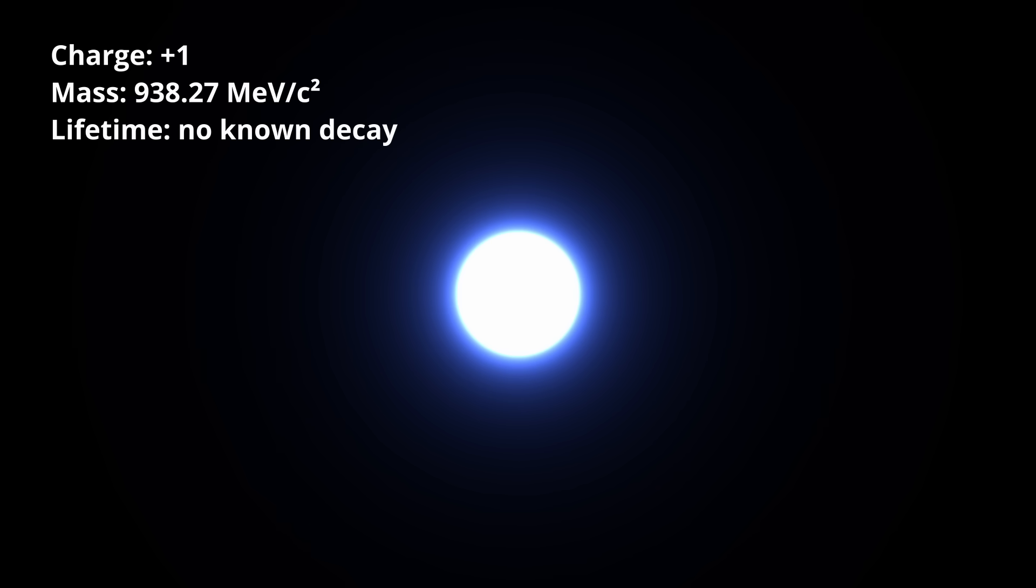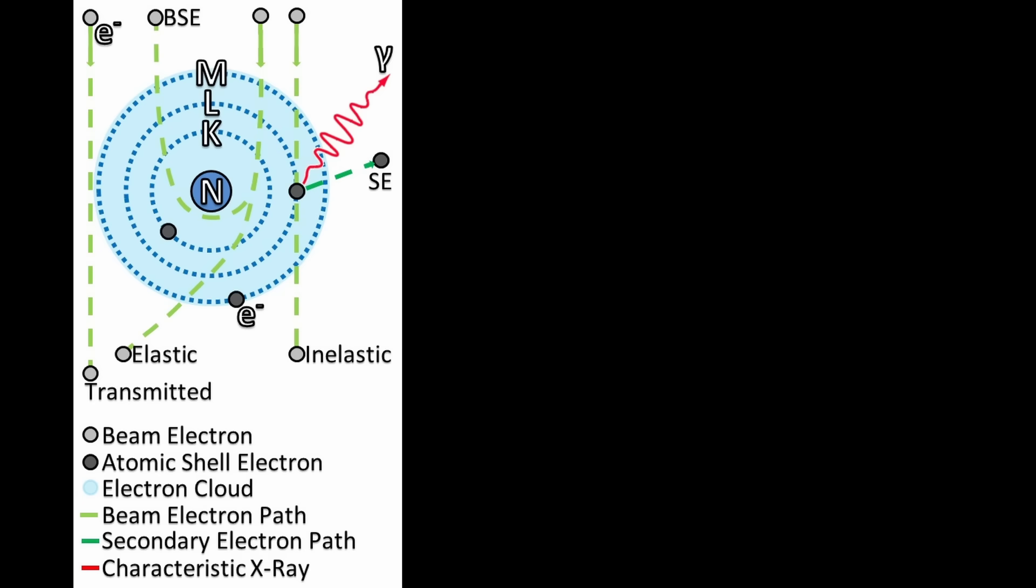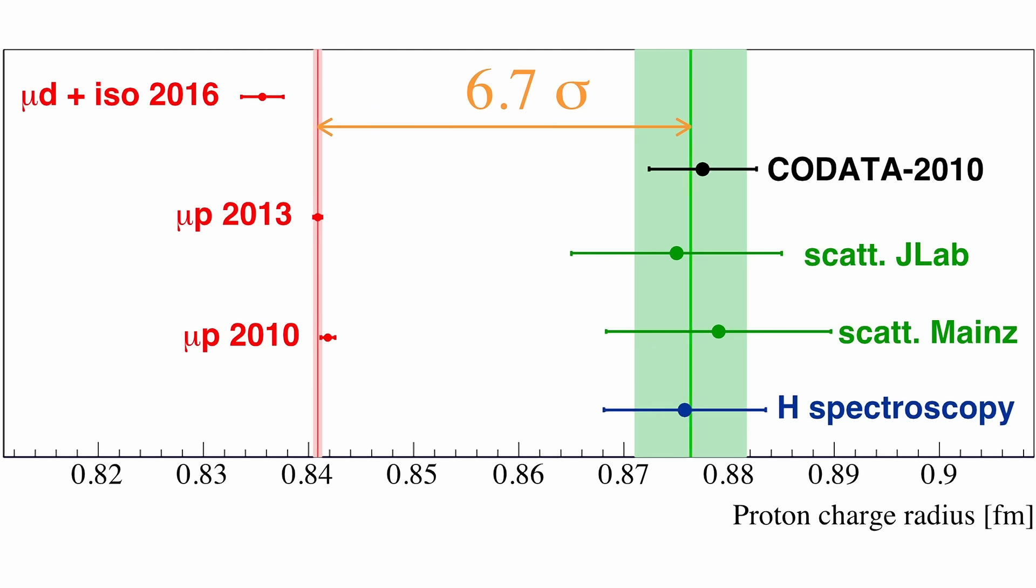The proton is one of the most fundamental building blocks of matter, yet its exact size remains an open question. Traditionally, its charge radius has been measured using two methods, electron scattering and spectroscopy of hydrogen atoms. Both methods originally provided a consistent value, around 0.88 femtometers. But in 2010, a new type of measurement, using muonic hydrogen, where a muon replaces the electron in the hydrogen atom, gave a result nearly 4% smaller, around 0.84 femtometers.